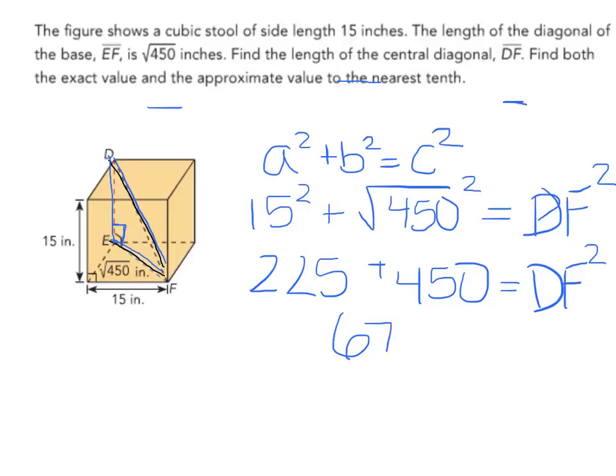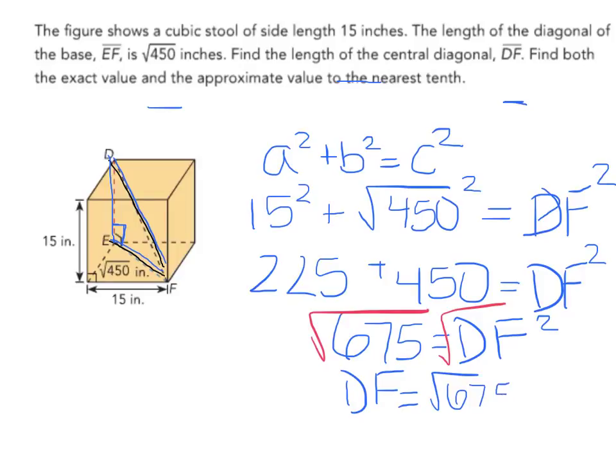So these add up to 675 = DF². I can then take the square root of both sides. So DF = √675, which is approximately 26.0 inches.